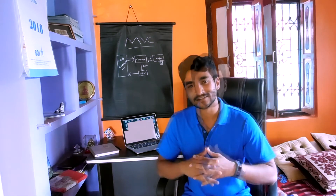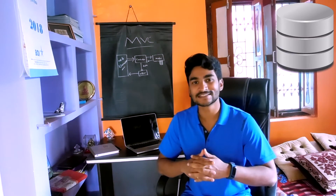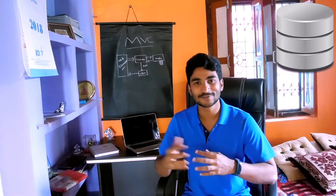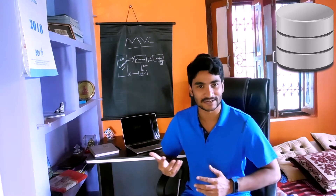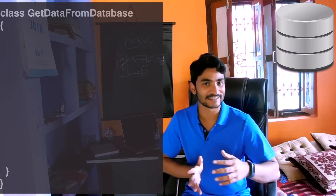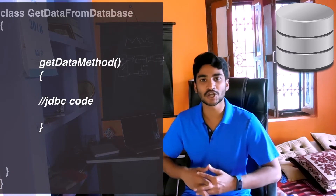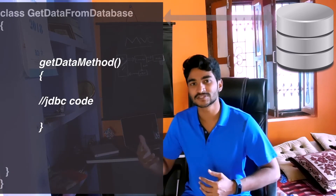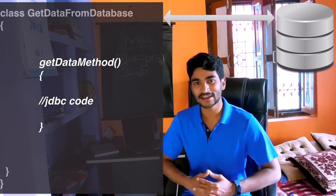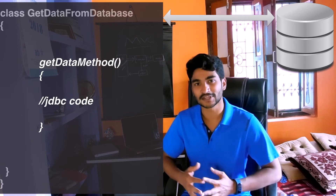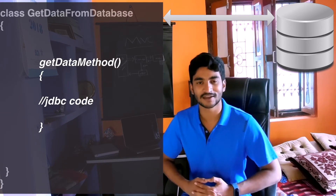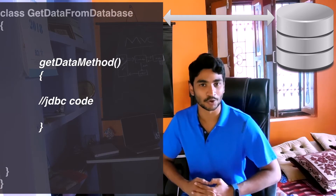What about the model? The model is going to be your database, a file system, or a list which contains or stores data. We can write a simple class with a few methods inside it to talk to the database, to the file system, or to a list, to get and save data from that list or database. We're going to see everything about it when we get into the code.